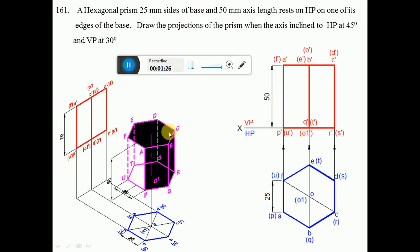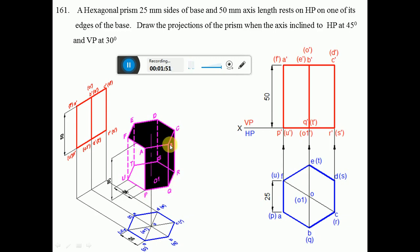Since it is resting on HP, all the edges are on HP. When you look from the top view, ABCDEF is near to the observer, so it becomes visible. PQRSTU is at the base, so when you look from the top view, it is not visible because P is hidden by A, Q by B, R by C, S by D, T by E, and U by T. So PQRSTU are all hidden edges, put in brackets.